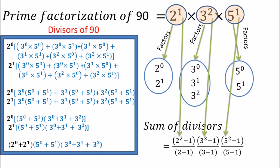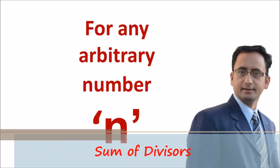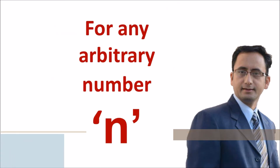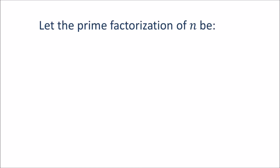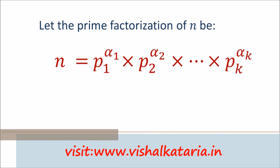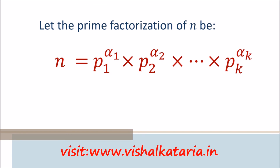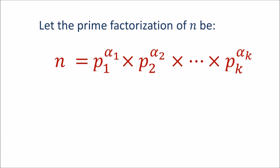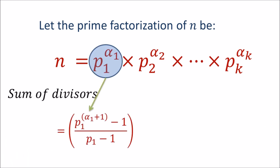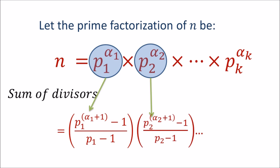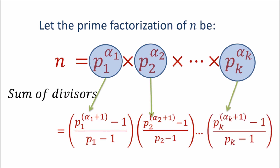Now we generalize this formula for any arbitrary number n. Let the prime factorization of n be p1 raised to alpha 1 times p2 raised to alpha 2 times ... times pk raised to alpha k. The sum of divisors is then equal to (p1 raised to alpha 1 plus 1 minus 1 upon p1 minus 1) times (p2 raised to alpha 2 plus 1 minus 1 upon p2 minus 1) up to (pk raised to alpha k plus 1 minus 1 upon pk minus 1). This is the general formula to find the sum of divisors of an arbitrary number n with a given prime factorization.